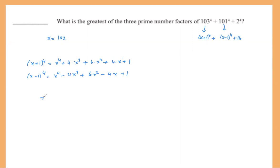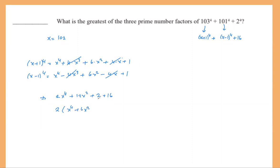When we add these two expansions, the odd-power terms cancel each other. We get two copies of x^4, plus 12x^2, plus 2, and then there is 16 as well. So let's keep that in mind. The goal is to find the prime factors of this sum. We see this is already divisible by 2.